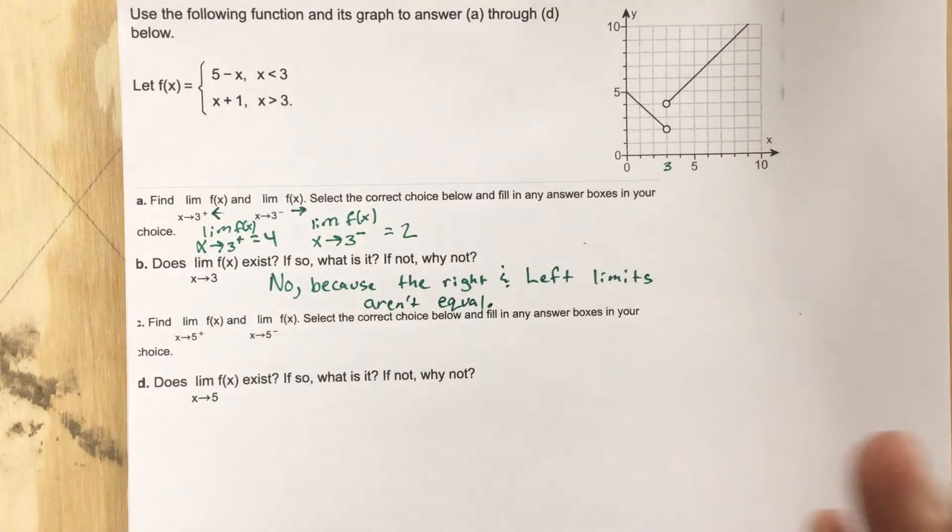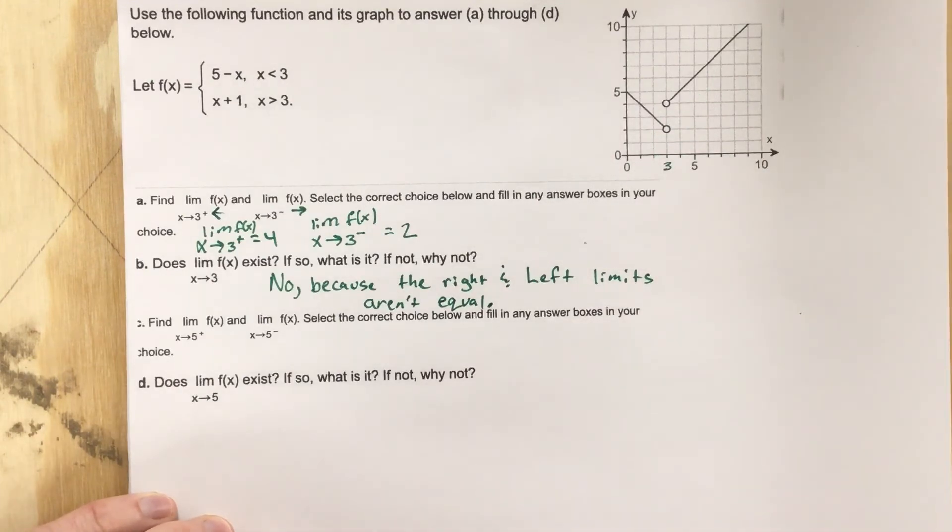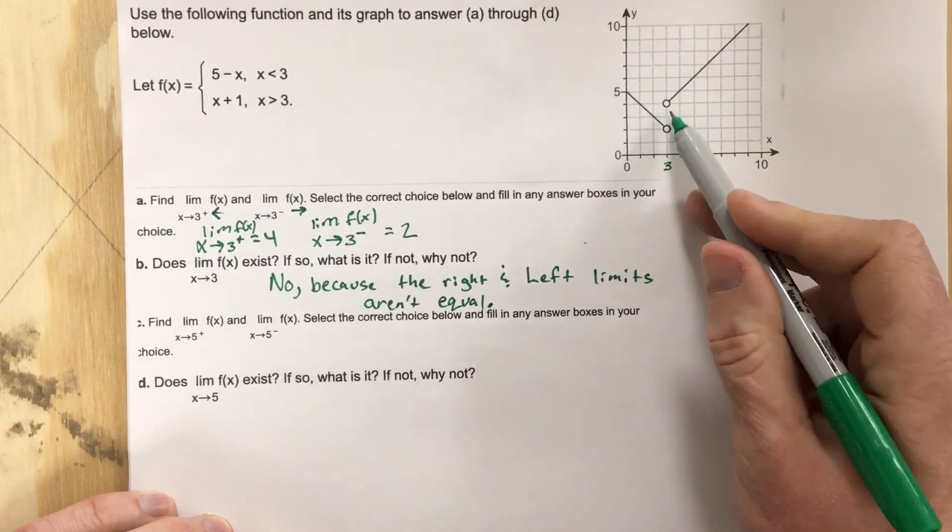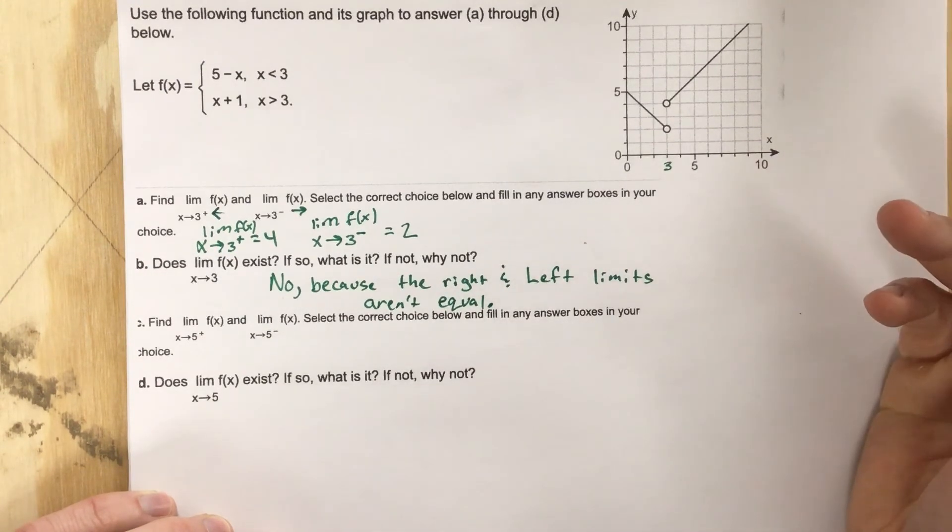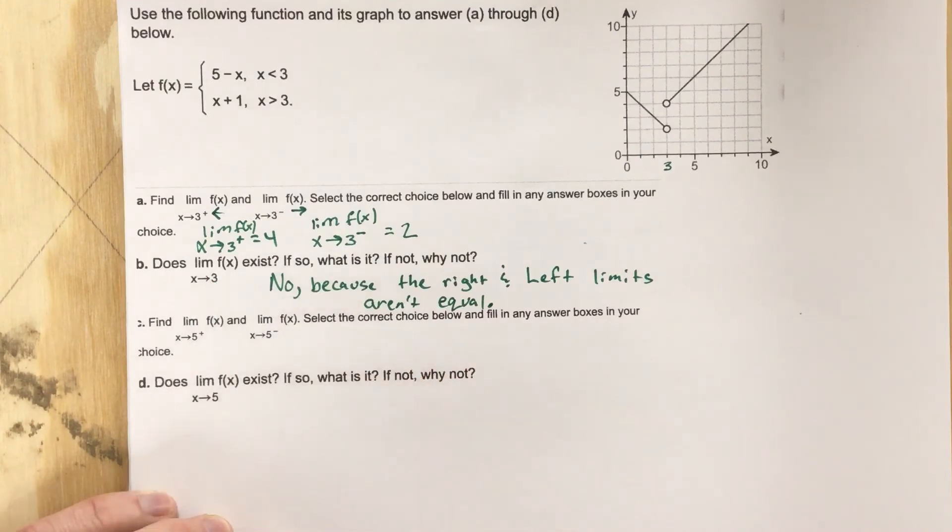They have their own limits when we're just looking at them from the right and from the left, but if we say what's the limit as x approaches three, we can't say because they're two different numbers. So because they're not the same, there's no limit. The limit does not exist for x approaches three.